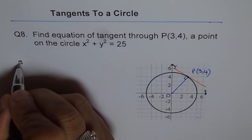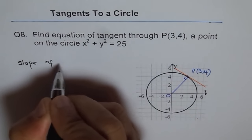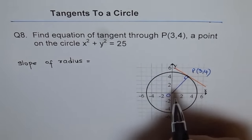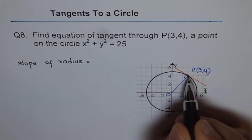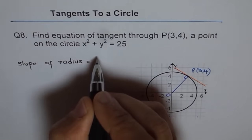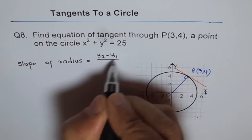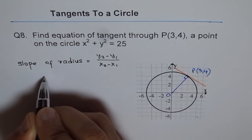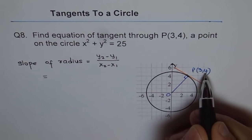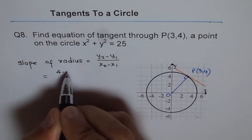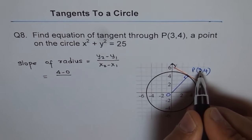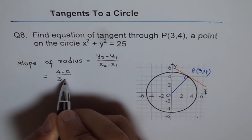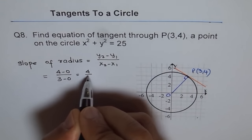First, find the slope of the radius. The slope of the radius equals (y₂ - y₁) / (x₂ - x₁). The origin is (0, 0) and this point is (3, 4), so slope of the radius = (4 - 0) / (3 - 0) = 4/3.